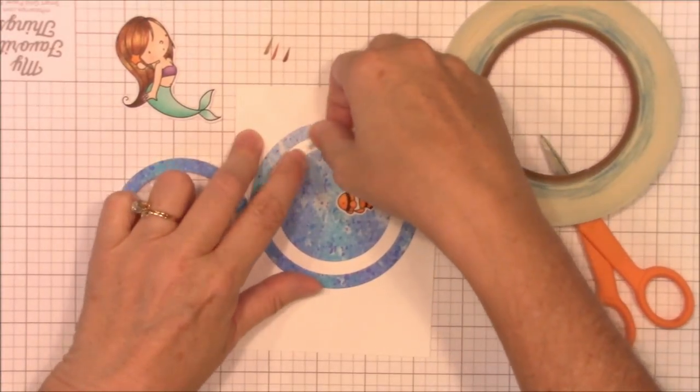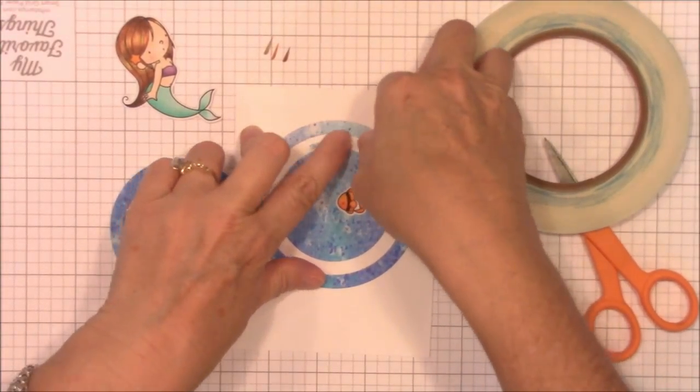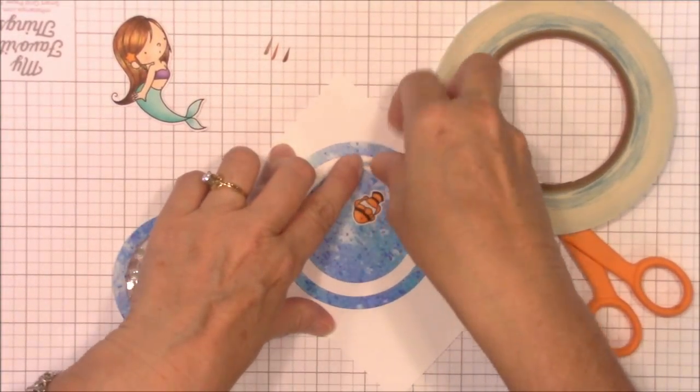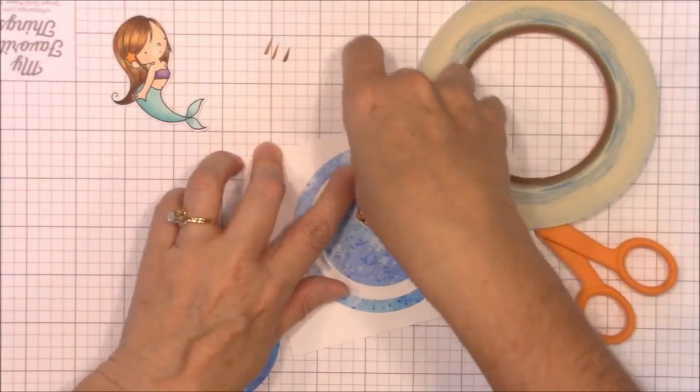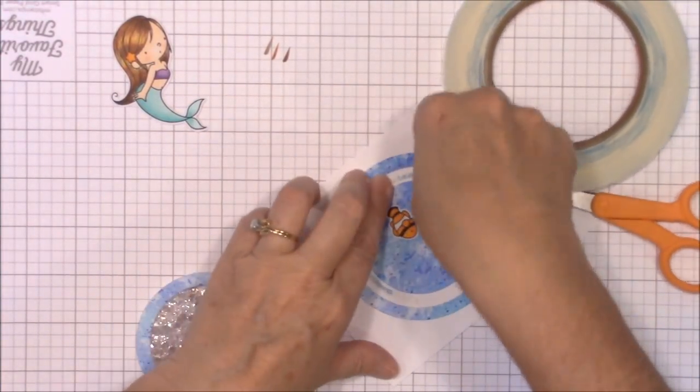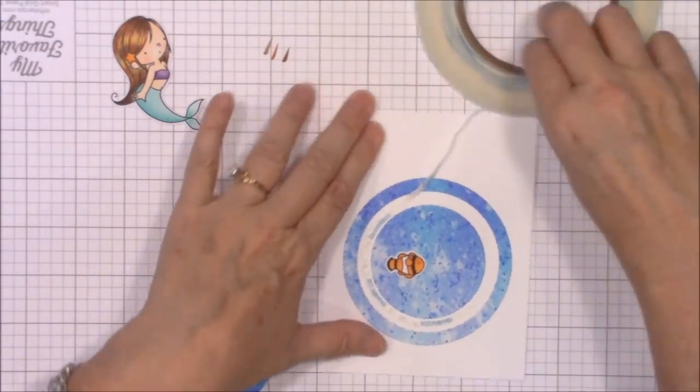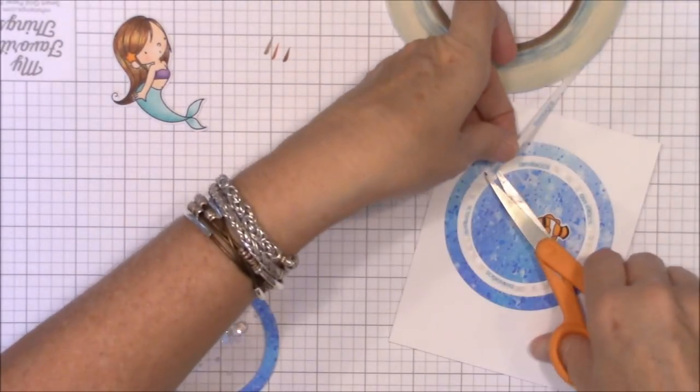I'm using some one-eighth inch double-sided tape in the circle where my shaker pocket's going to go. I needed a strong adhesive to bear the weight and bulk of that pocket, especially for mailing, and I don't want my shaker to go flying off into outer space when the recipient shakes it, do I?